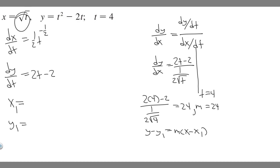Let's plug in 4 for the x value. x equals the square root of t, so t is 4, giving us the square root of 4, which is just 2. So x1 is 2. y1 is t squared minus 2t, plugging in 4: 4 squared minus 2 times 4. So 4 squared is 16 minus 2 times 4 is 8, so it's equal to 8.